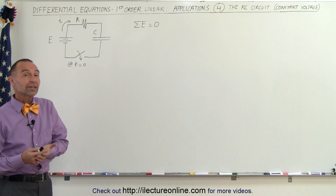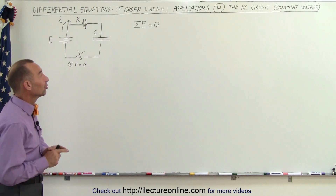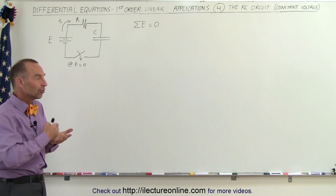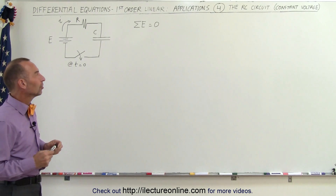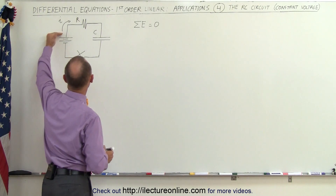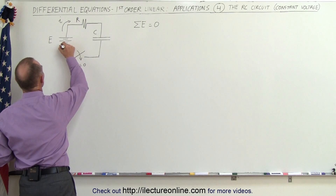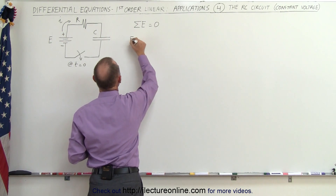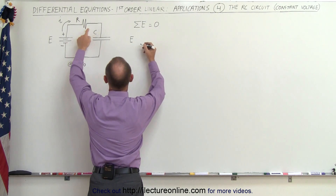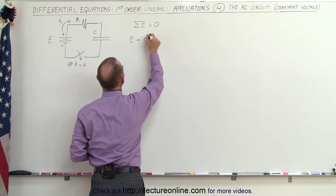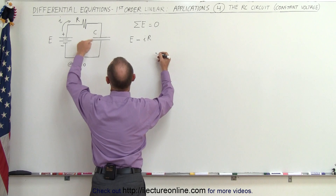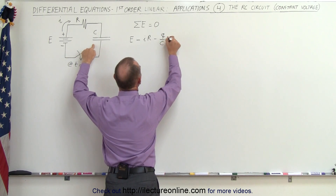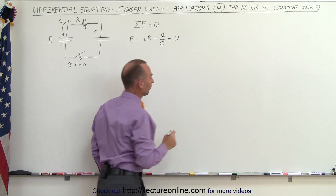We're going to solve the differential equation, but first we have to find it by assuming that when we go around the circuit we sum up all the voltages and they add up to zero. Going across the battery from negative to positive we have a voltage rise equal to E, minus the voltage drop across the resistor which is minus I times R, and minus the voltage across the capacitor which is minus Q divided by C, and that all adds up to zero.